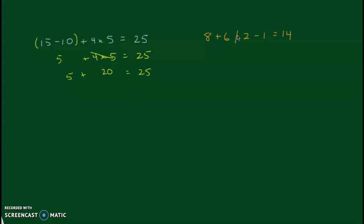So 8 plus 6, this is a division symbol. Divided by 2 minus 1 equals 14. Let's start with our parentheses here. So 8 plus 6 is 14. I'm done with that. So I'm going to bring down my divided by 2 and my subtract 1. And that needs to equal 14. Division comes before subtraction. So 14 divided by 2 is 7. Well, I can already see when I bring this down that 7 subtract 1 doesn't equal 14. So I have to go back.